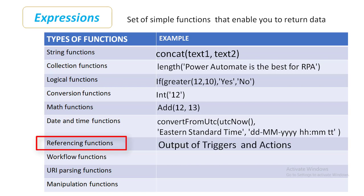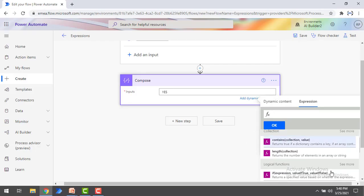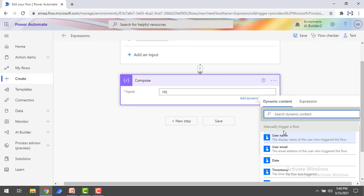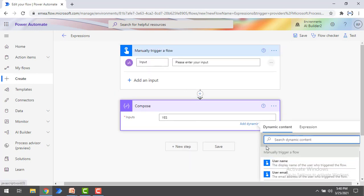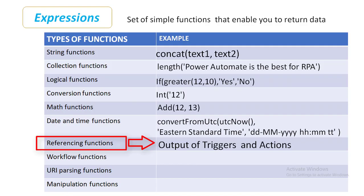Now, referencing functions. These referencing functions are used to work with the outputs of actions and triggers. If you see over here, I'm having some inputs from the manual trigger flow with actions. If you want to work on the outputs of the actions and triggers, in that case you are going to use referencing functions.